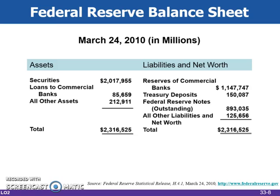The liabilities of the Federal Reserve Banks have three noteworthy items. The reserves of commercial banks represent the required reserves that banks must hold to ensure their stability. These reserves are also listed as assets on the banks' books. The Treasury deposits represents the amount of money the U.S. government has on deposit with the Fed. The government uses the money to pay its obligations. The Federal Reserve Notes Outstanding represents the supply of paper money currently circulating outside of the Federal Reserve Banks. Over the past couple of years, the balance sheet of the Fed has increased dramatically as the Fed has taken various actions to help the economy recover from the recession.